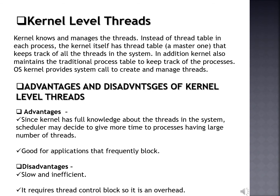About the advantages of kernel level threads: since the kernel has full knowledge about the threads in the system, the scheduler may decide to give more time to processes having a large number of threads. If one thread in a process is blocked, the kernel can schedule another thread of the same process. Kernel routines themselves can be multi-threaded. It is good for applications that frequently block. About the disadvantages: kernel threads are generally slower to create and manage than user threads. Transfer of control from one thread to another within the same process requires a mode switch to the kernel.